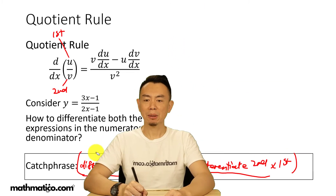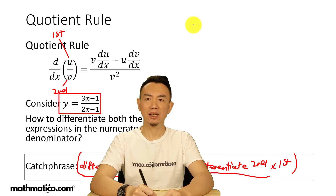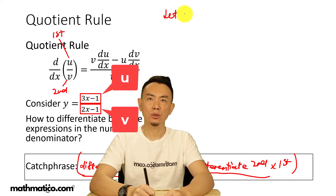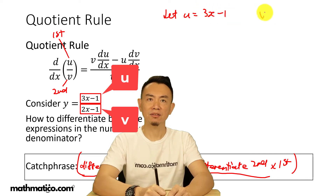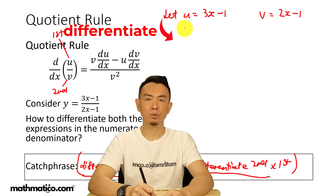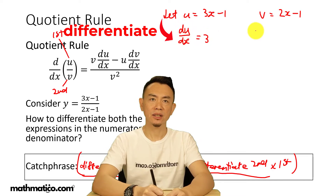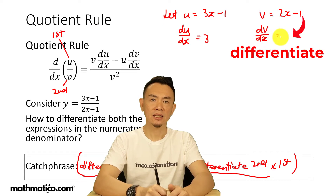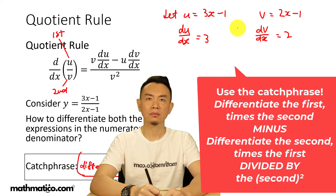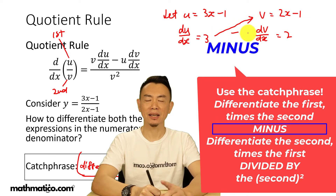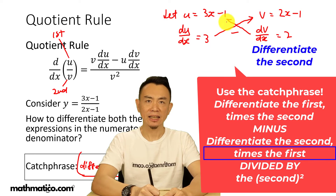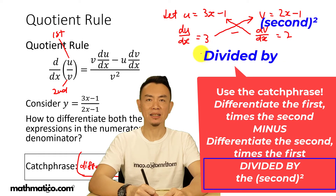So this is how we do the quotient rule. Coming back to this question: y equals (3x minus 1) over (2x minus 1). We're going to let u equal the first expression, which is 3x minus 1, and let v equal the second expression, which is 2x minus 1. We differentiate each one separately: du/dx equals 3, dv/dx equals 2. So now you take: differentiate the first times the second — and this time it's a minus, whereas in product rule it's a plus — differentiate the second times the first, then divide it by the second squared.